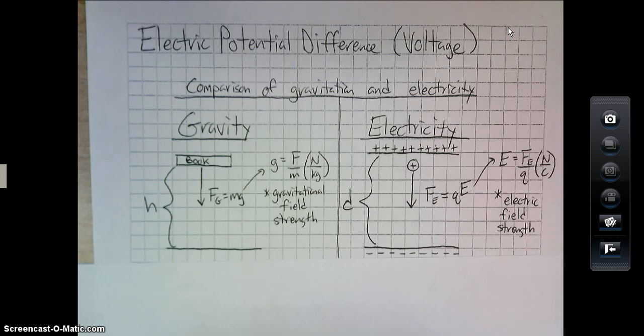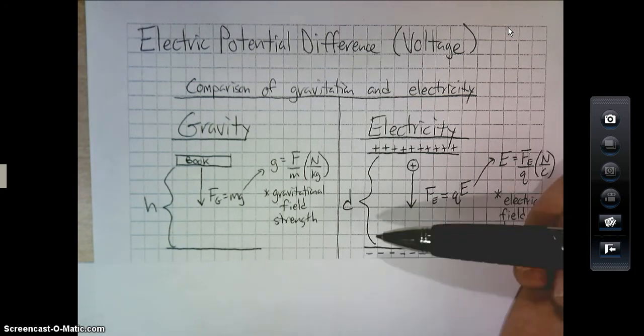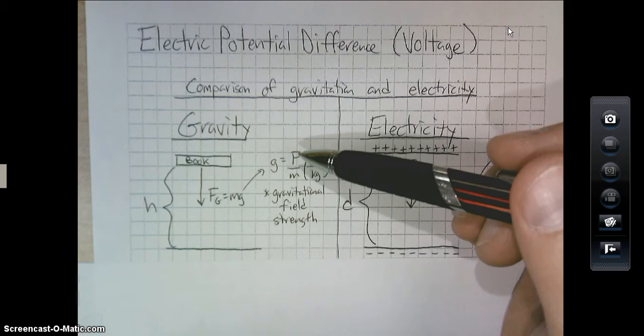Now, I do find that, especially with electricity, it's harder to understand at times because it's harder to see. So I'm going to try to work a lot with some analogies. So the first one here, I'm going to compare gravity to electricity to kind of help us out. So one thing, and gravity is fairly understandable for most of you.